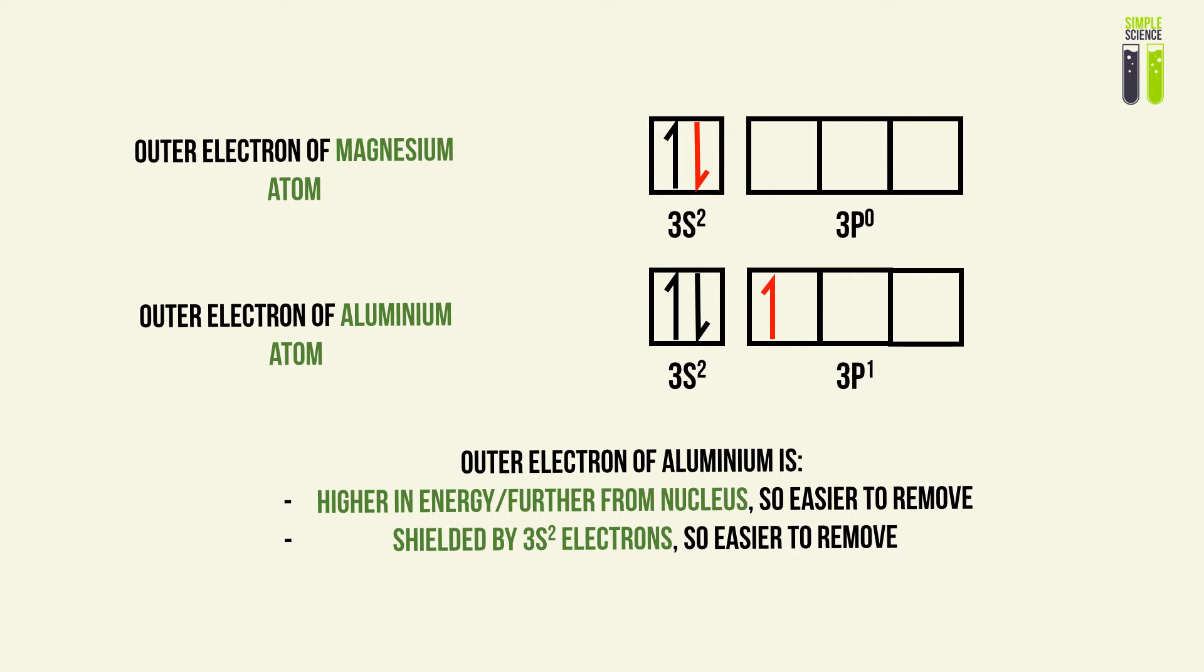In addition, it's also being shielded or repulsed by the two electrons in the 3s subshell. This causes it to be easier to remove. The key thing to mention is that these factors outweigh the effect of increased proton number. This outweighs the general trend.